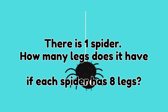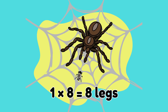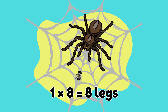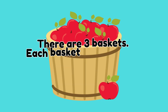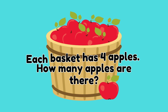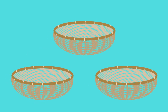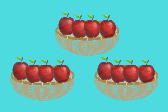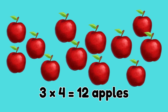There is one spider. How many legs does it have? If each spider has eight legs, one times eight is equal to eight — eight legs! There are three baskets. Each basket has four apples. How many apples are there? Three times four is equal to twelve — twelve apples!